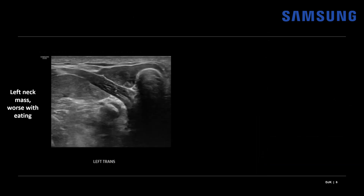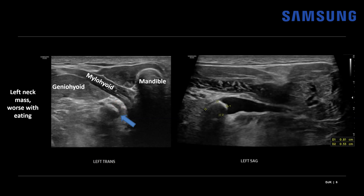Let's look at our case. This was a male patient presenting with a left neck mass that enlarged and became more painful with eating. Here we're looking at a transverse view at the left floor of the mouth — there's the mandible and the mylohyoid, and we also see the geniohyoid muscle. We notice an echogenic shadowing focus at the left floor of mouth with some surrounding sliver of anechoic fluid. On long axis, that fluid corresponds to a dilated duct leading up to an obstructing stone — a 0.8 centimeter calculus at the floor of the mouth.